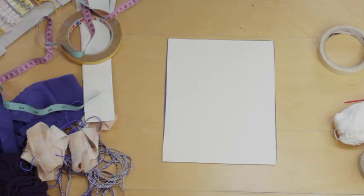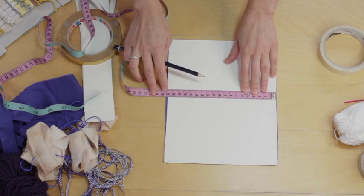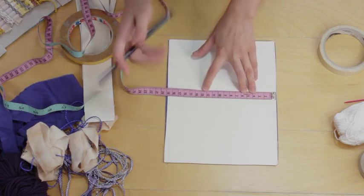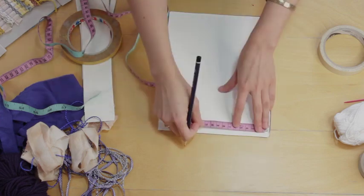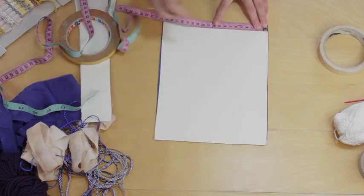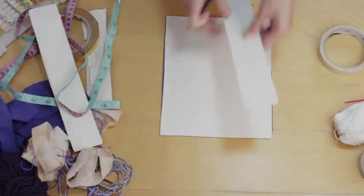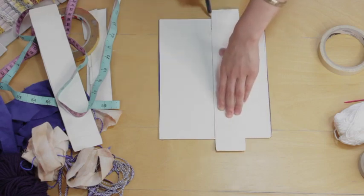So we're going to start by finding the middle of our loom. I'm going to measure it and find the middle. Mine is roughly 19 centimeters wide, so I'm going to find the middle which is about nine and a half, and I'm going to mark that at either end.